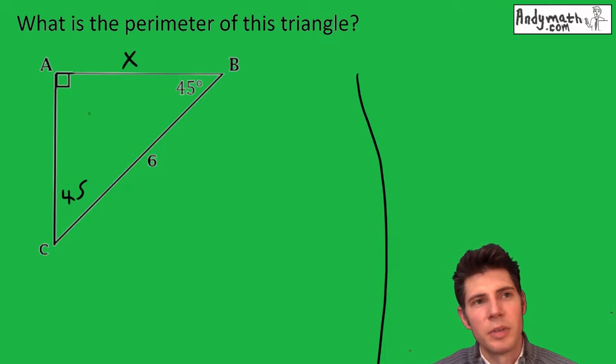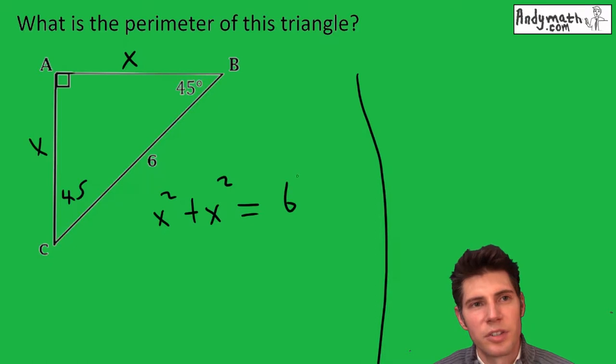To solve for x, Pythagorean theorem says x squared plus x squared equals six squared, because Pythagorean theorem is a squared plus b squared equals c squared.